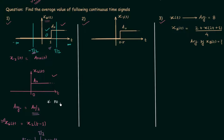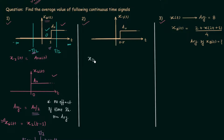There is no effect of time shifting on the average value. Now let's solve the second problem. In the second problem we have a similar signal x7t, which has been obtained by time scaling of signal x6t.